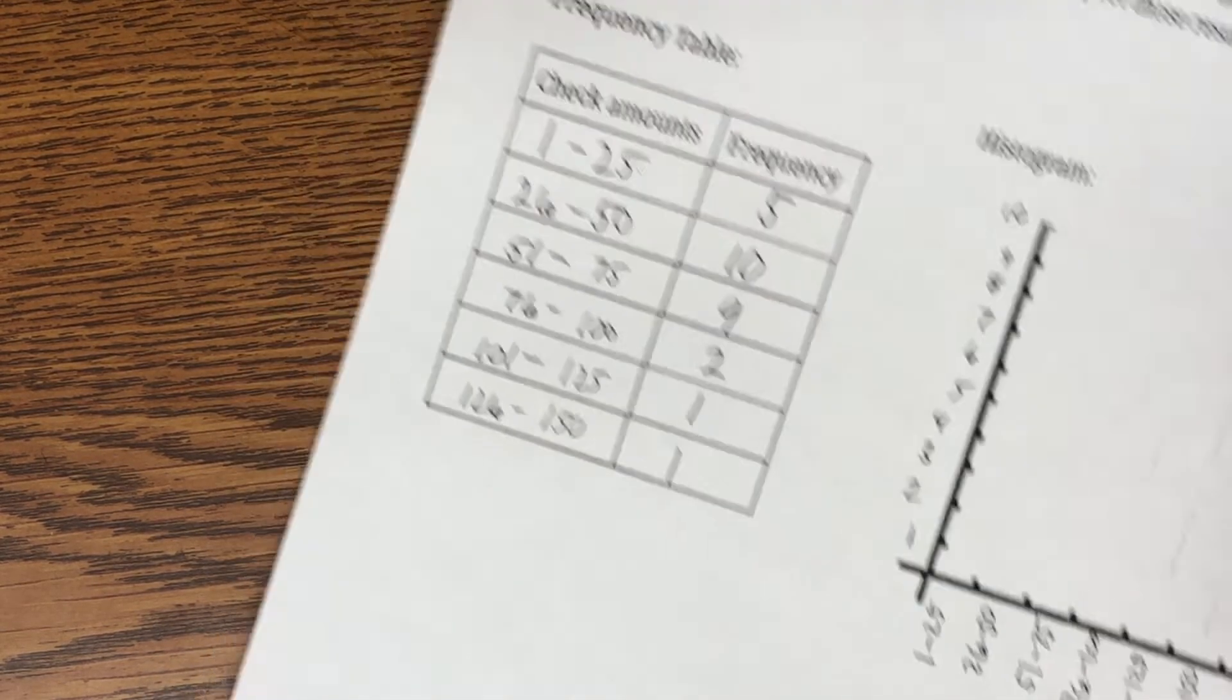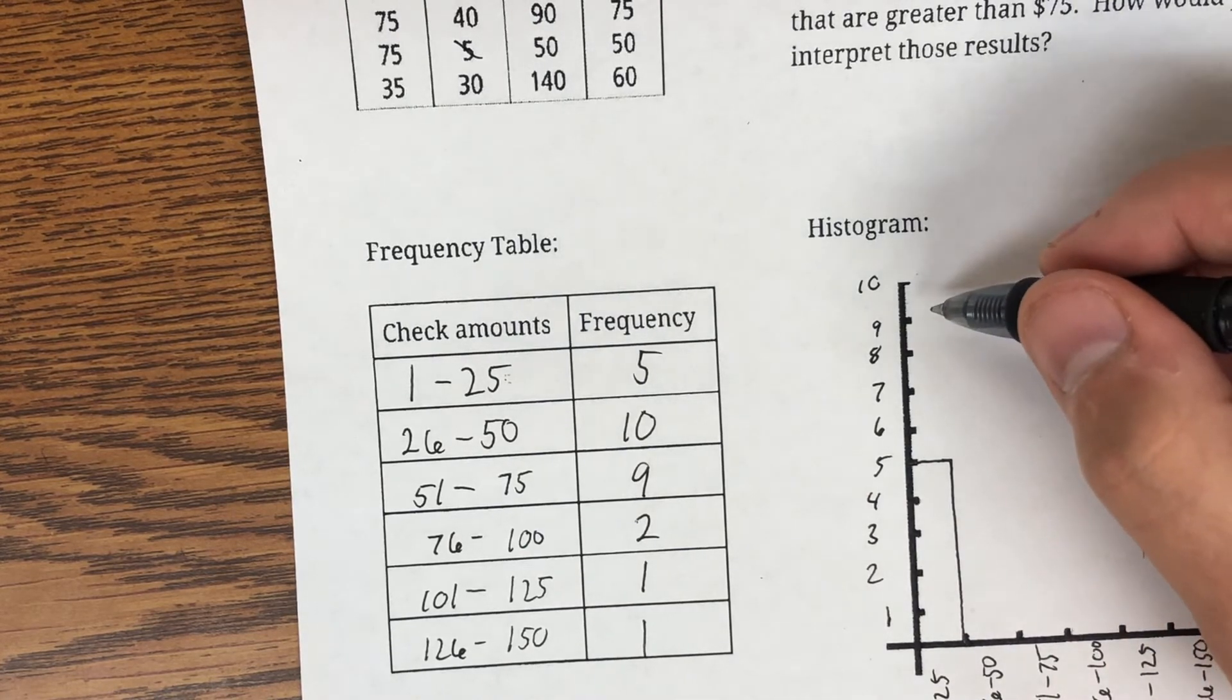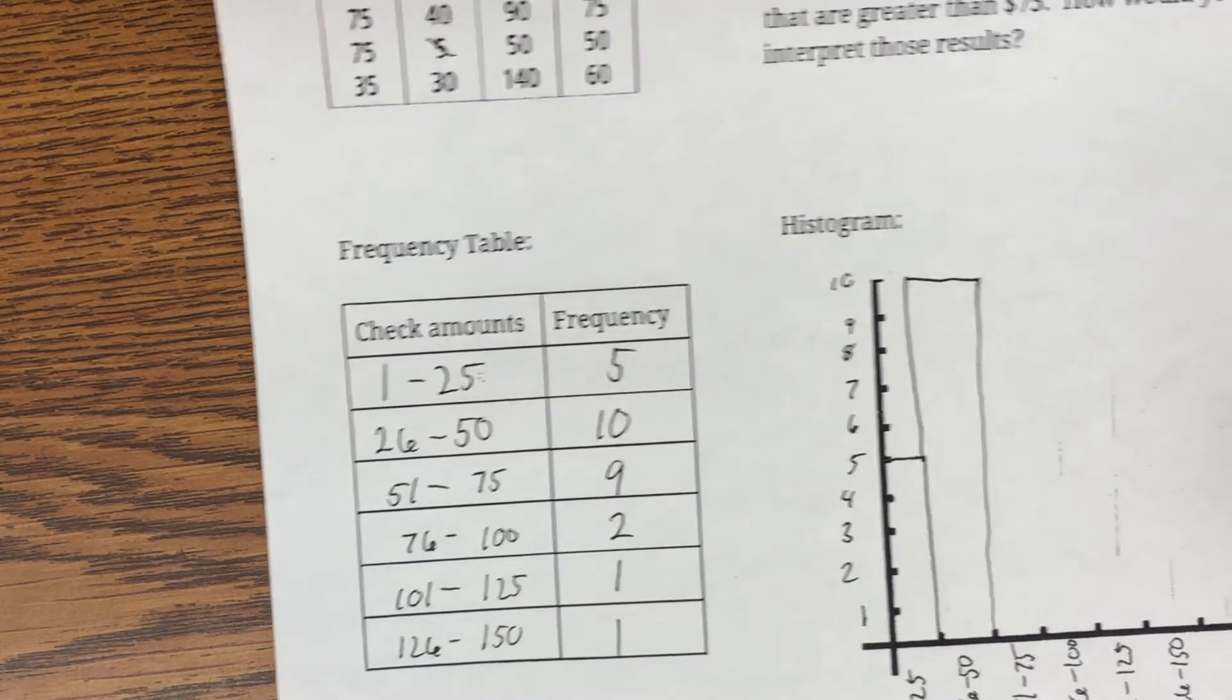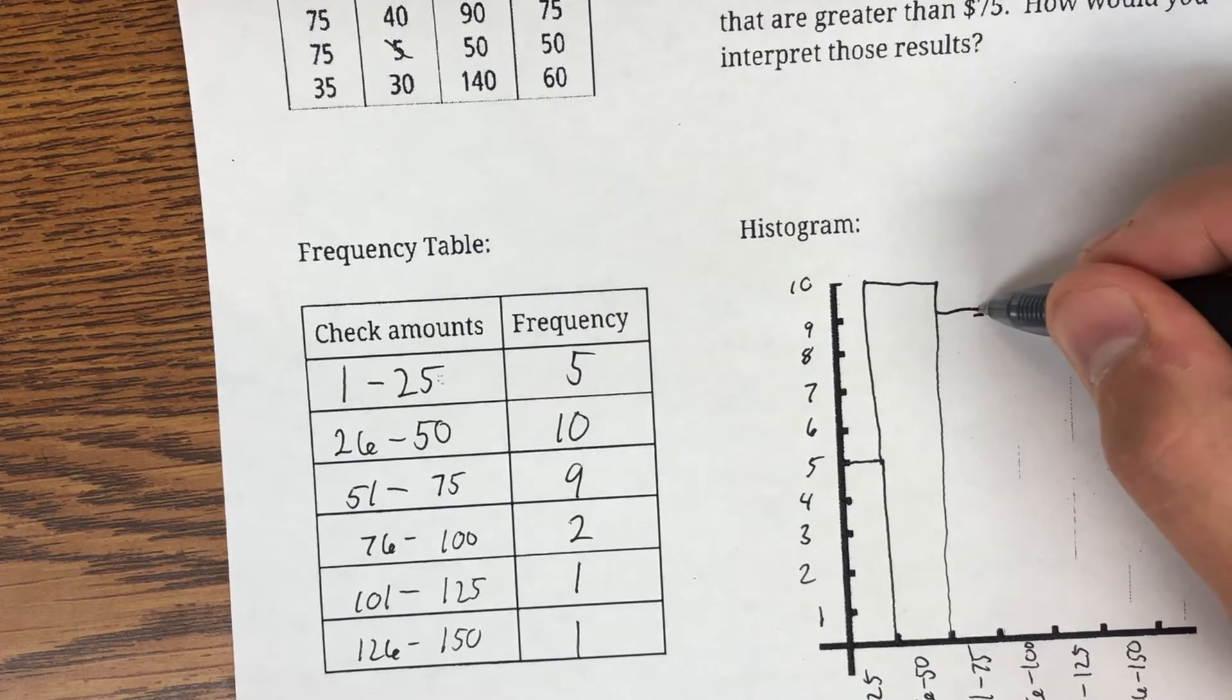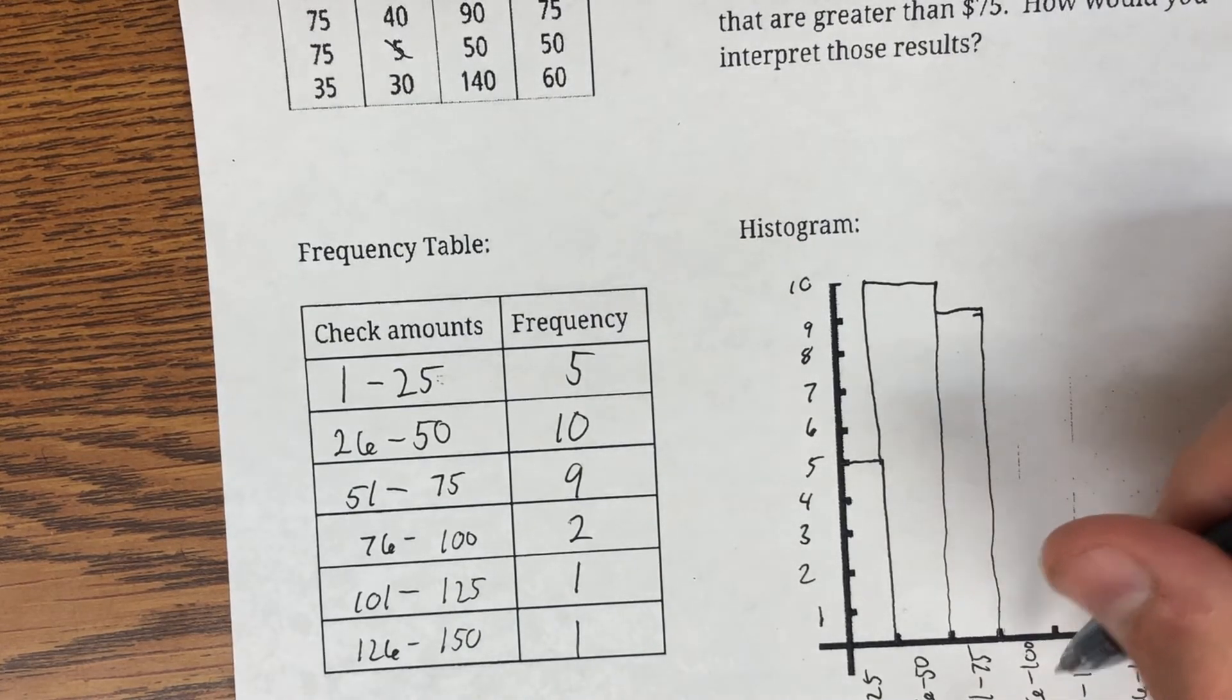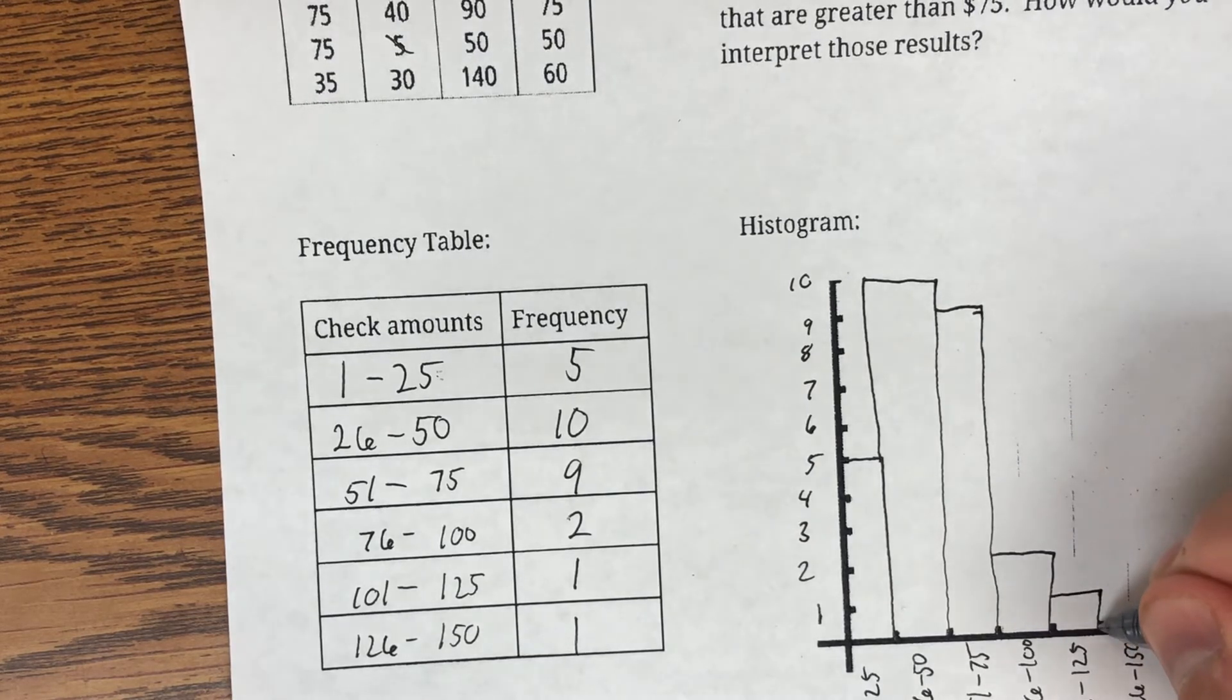All right. So, I'm going to plot how many times it occurred. So, between $1 and $25, I had 5, so my bar goes up to the 5 and straight down. Between $26 and $50, I was all the way up at 10, so that would go all the way up to my 10 to here, over and down. Between $51 and $75, I had 9, so I'm at 9. And then draw my bar graph down. Between $76 and $100, we were at 2, so that's really low here. And then, between $101 and $125, we were at 1 and 1.